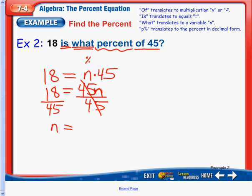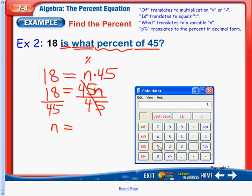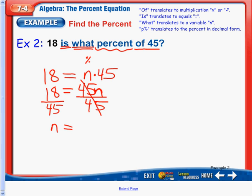And now we have 18 over 45, using our calculators, 18 divided by 45, going to give us 40, or 0.4 tenths. 40 hundredths, or 4 tenths.